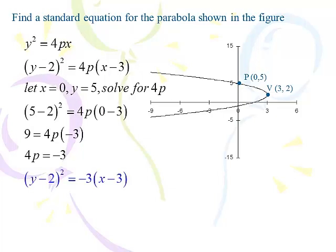The 5 went in for y: 5 minus 2 is 3, 3 squared is 9. The 0 went in for x. Match x with x, y with y. My 4p comes out to be negative 3, and I'm done. The answer is y minus 2 squared equals negative 3 times (x minus 3). Solve for 4p and you've wrapped it up.